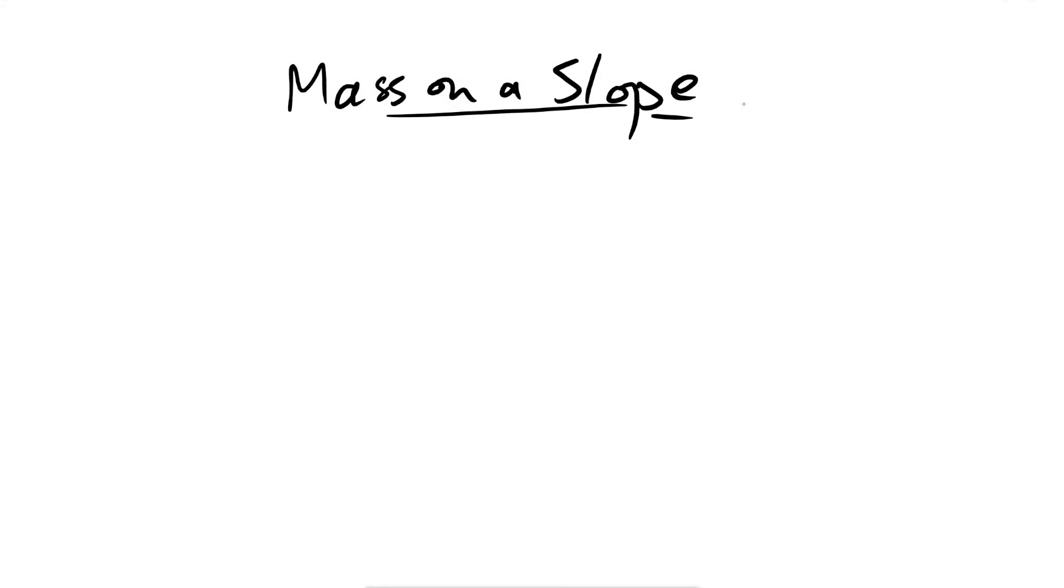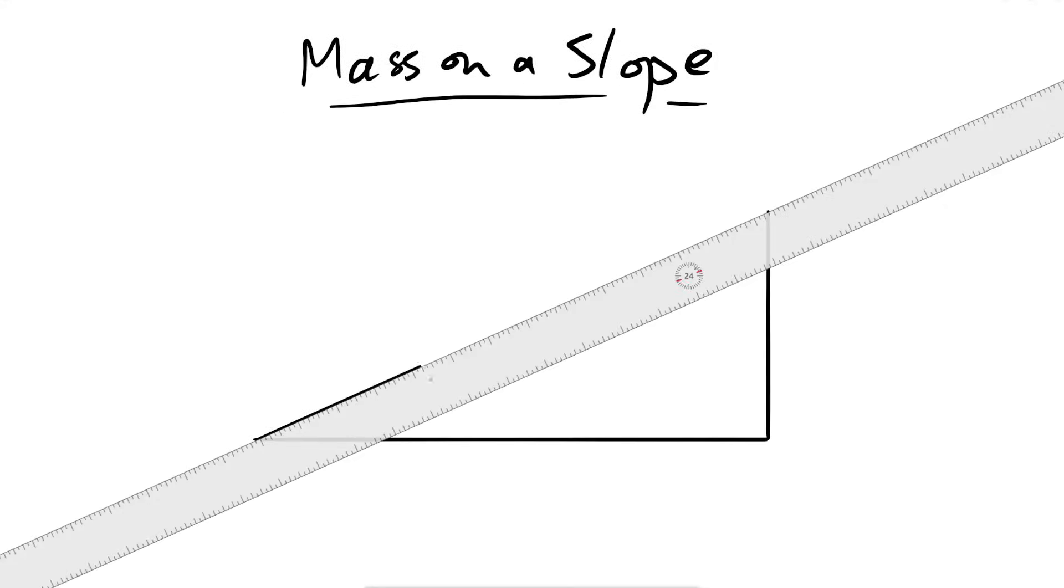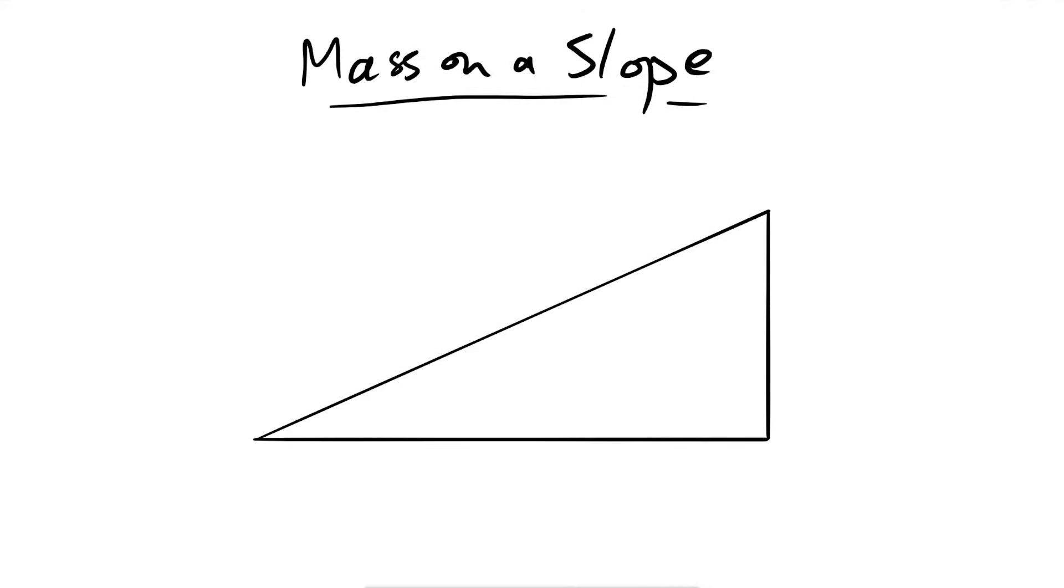This is a classic question: mass on a slope. A mass on a slope could be many things—it could be just a box, a ball, a car, a skier. Take your pick.